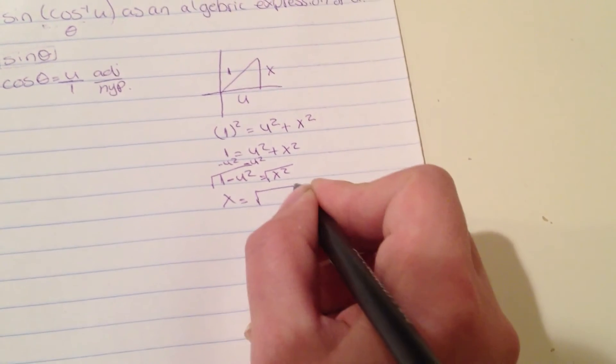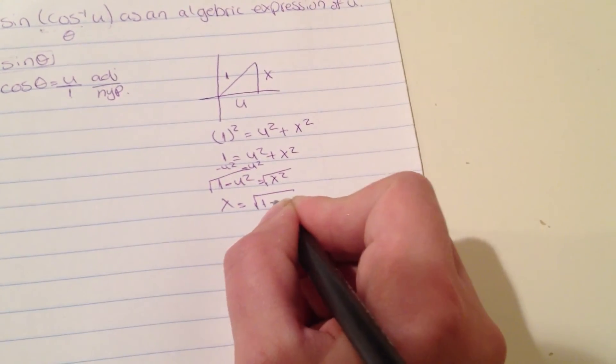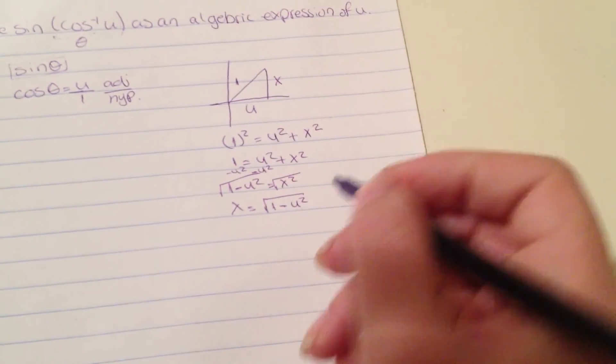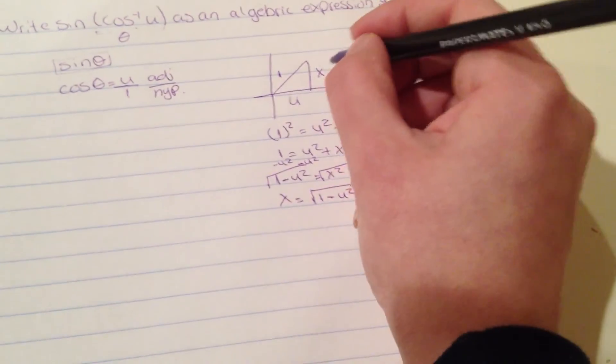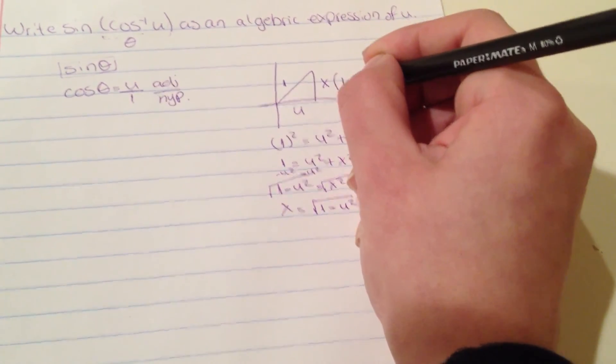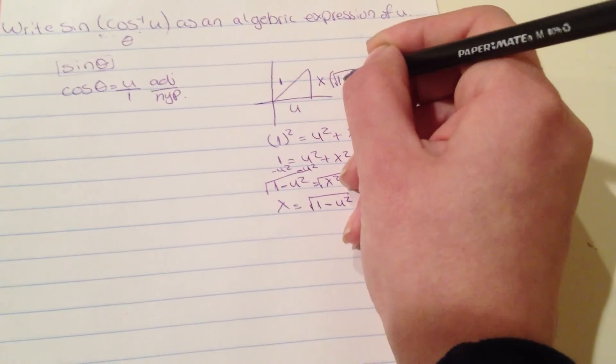So this side is square root of 1 minus u squared.